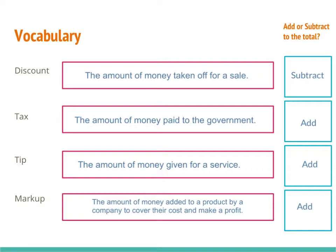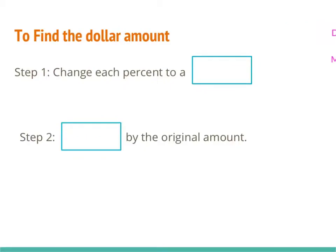So now let's see how we apply these things into problems finding discount, tax, tip, and markup. We have two steps to find the dollar amount. Step one is we're going to change the percent to a decimal — we can't multiply percents in our calculator, so they have to be decimals. Step two is to multiply by the original amount, and that will tell us how much money is in the tip, tax, discount, or markup. Let's take a look at that now in example A.